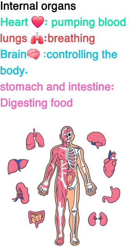Internal organs include: the heart, for pumping blood; the lungs, for breathing; the brain, for controlling the body; and the stomach and intestine, for digesting food.